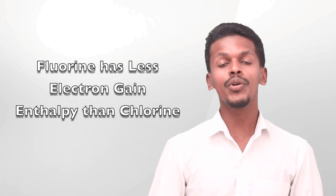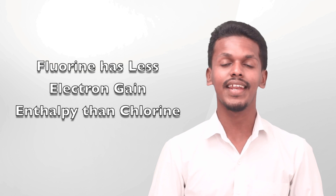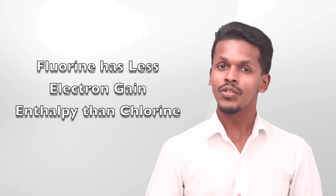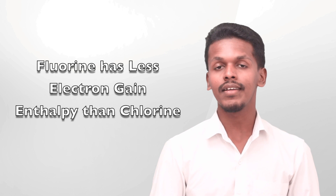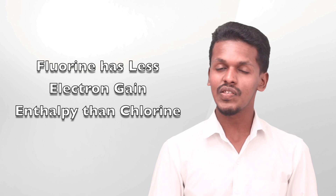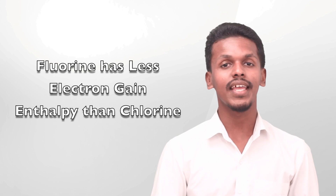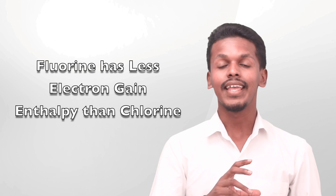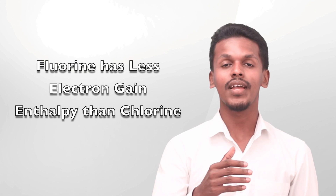Hello friends, now we are going to talk about why fluorine has less electron gain enthalpy than that of chlorine. This is the trend we learned in our previous lecture, where we got to know that electron gain enthalpy decreases down the group and increases across the period. So let us discuss that with the help of this theory.